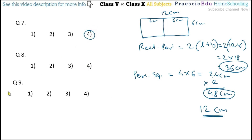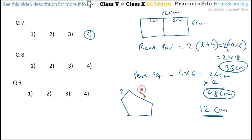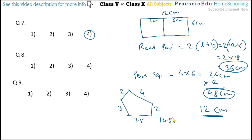Question number 8: what will be the perimeter of the figure given below? The sides are: 2, 4, 2, 3, and 3.5. Adding all sides: 2 + 4 = 6, 6 + 2 = 8, 8 + 3 = 11, 11 + 3 = 14, and then 14 + 0.5 = 14.5 cm. So the perimeter is 14.5 cm, which means option number 3 is the correct one.